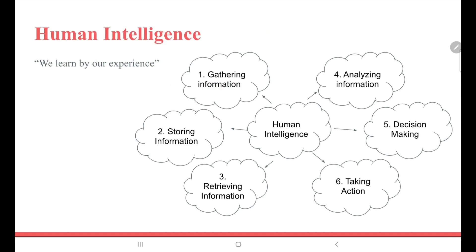Human Intelligence: We learn by our experience. If a person is standing near a candle, the person first gathers the information — okay, if the hand is coming towards the candle, the hand can burn. Then the person will store the information inside the brain. Whenever in the future the person looks at a burning candle, the person will retrieve the information.